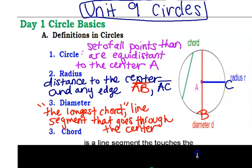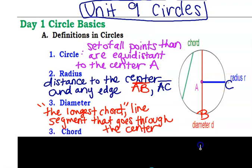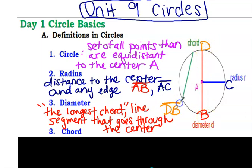The diameter is the longest chord. What does that mean? It's the line segment that goes through the center. So if this was point D right here, the diameter would be this whole thing — that would be DB. It has to go through the center in order for it to be a diameter.